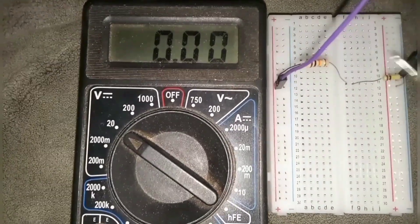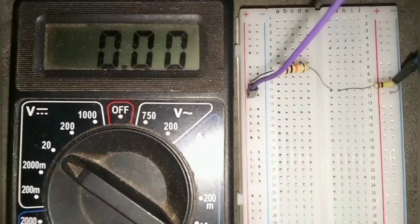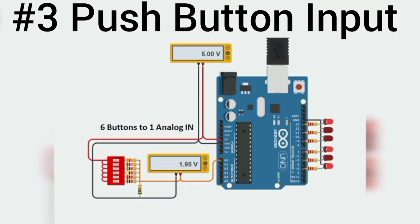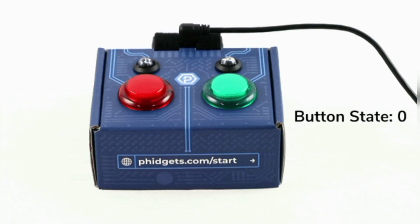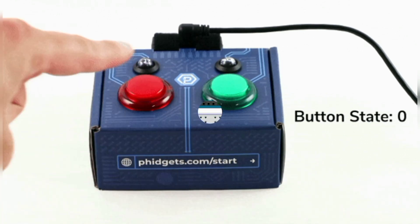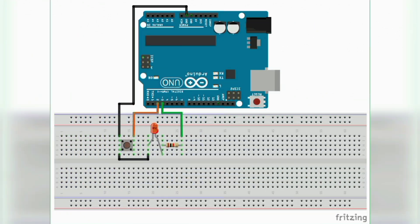Next basic electronic circuit is the push button input. Understanding how to read digital inputs lays the foundation for user interaction in embedded systems. But there is a challenge you have to be aware of when working with push buttons, and that's the challenge of bouncing.